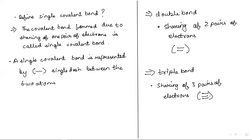In the next class, we are going to study about the characteristics of covalent bonds and covalent compounds, allotropic forms, and the versatile nature of carbon.